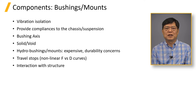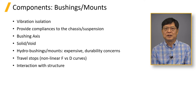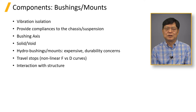Vehicle structures are not rigid. Structure stiffness combined with bushing rate makes the equivalent stiffness at the bushing attachment lower than the actual bushing rate. This means that good correlation in compliance analysis is achieved from a good representation of bushing force versus deflection curves and the structural compliance of the vehicle.